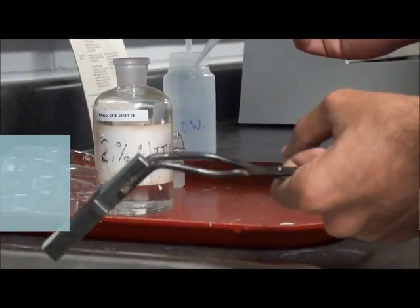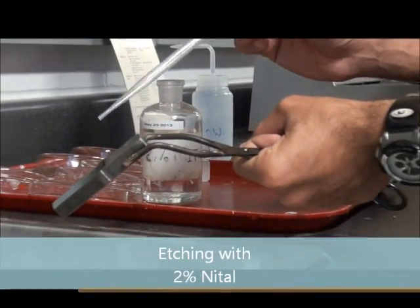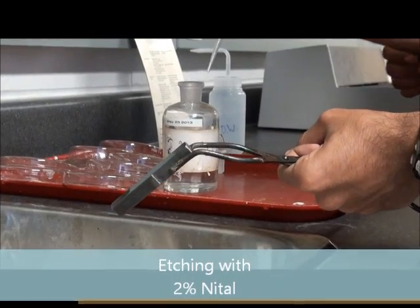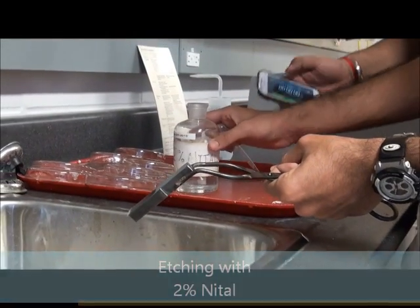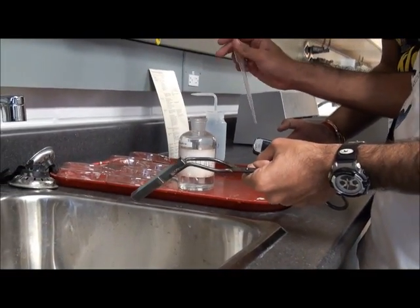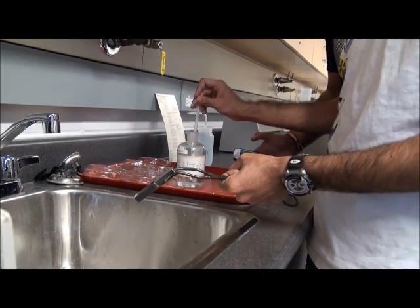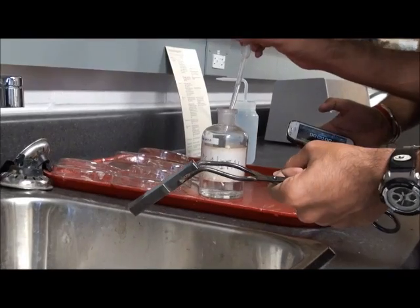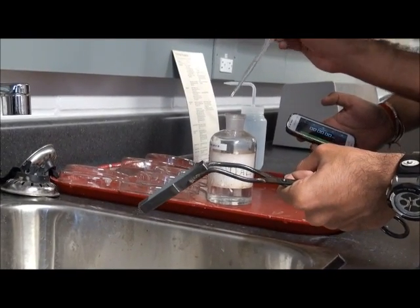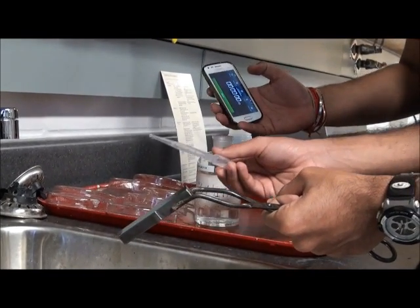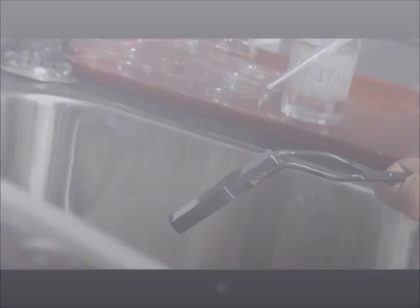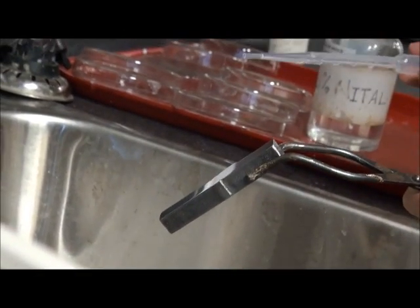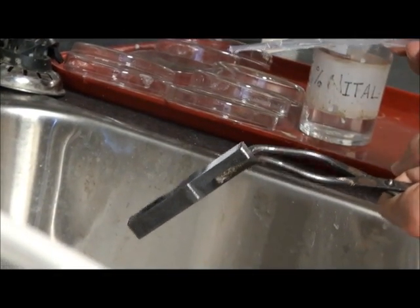Now, after drying the sample, we are going to use the nital etchant, which is a very concentrated acid. It is used on the sample to clear the grain structure of the sample, which we will see after magnifying it. Make sure you use the holder because it is very concentrated acid and it could harm your hand.